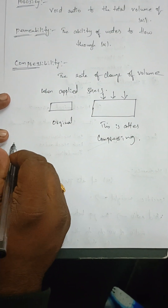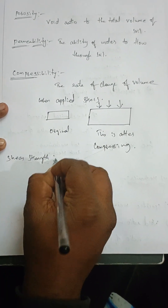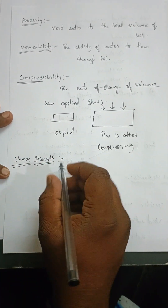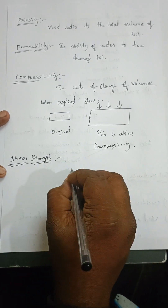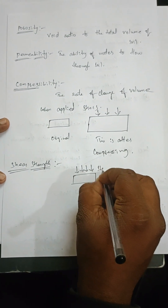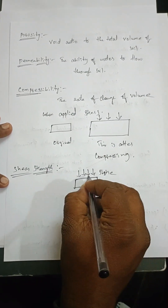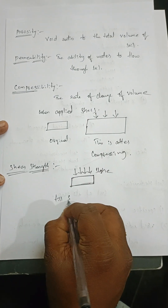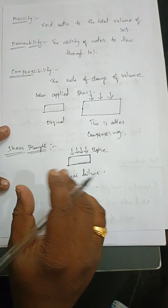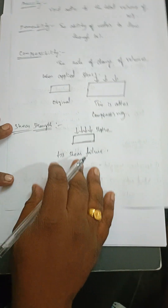The last key property is shear strength. The meaning is in the name. If this is a material and this is the shear stress applied to it, shear strength is how much shear stress the material can absorb until it reaches shear failure. The maximum shear stress a material can take before shear failure is called shear strength.